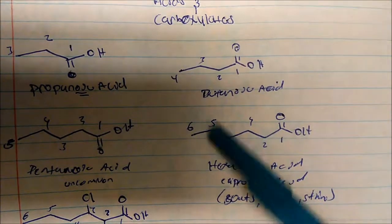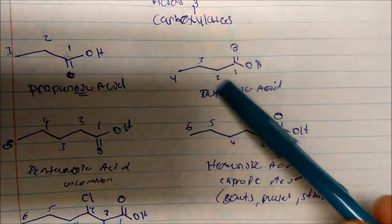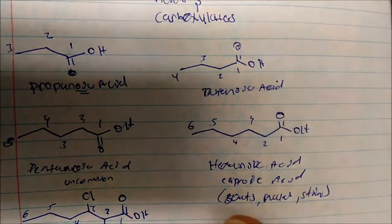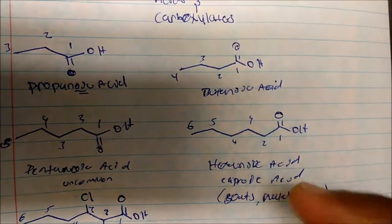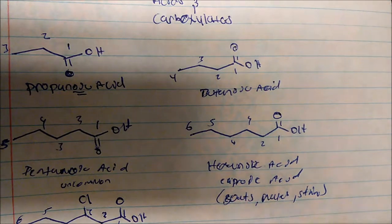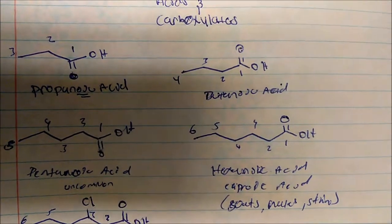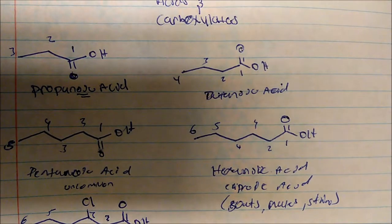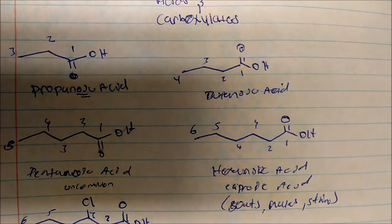So butanoic acid is also another common one. Hexanoic acid as I said before is common. Valeric acid — the five-carbon chains, three-carbon chains, and seven-carbon chains — are pretty uncommon.